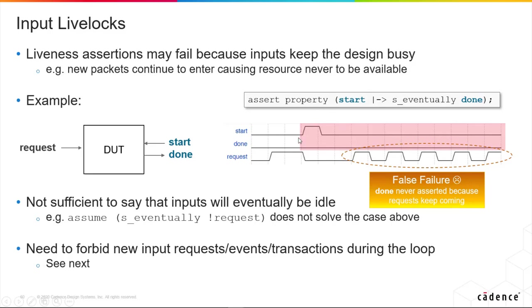Here we've got start — done is low. The reason we had a start is because we had a prior request. Once we had a start, all the tool has to do to falsify your assertion is to keep making requests. As we can see from this waveform, it's not sufficient just to assume that eventually there is no request, because that assumption is honored by the tool — it just drops the request, makes another request, drops the request — and there's no way the design can outrun what the tool is doing with the input.